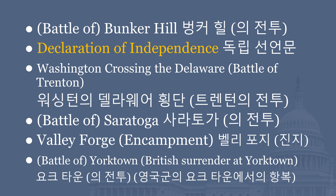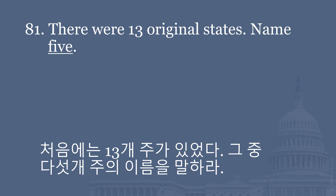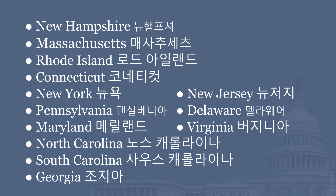There were 13 original states. Name five. New Hampshire, Massachusetts, Rhode Island, Connecticut, New York, New Jersey, Pennsylvania, Delaware, Maryland, Virginia, North Carolina, South Carolina, Georgia.